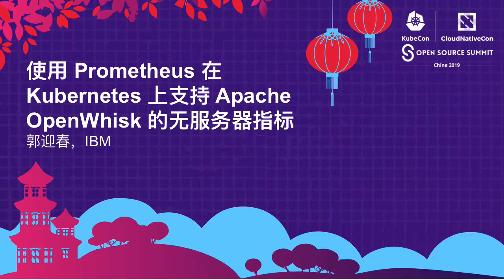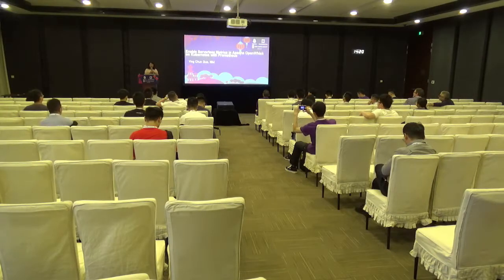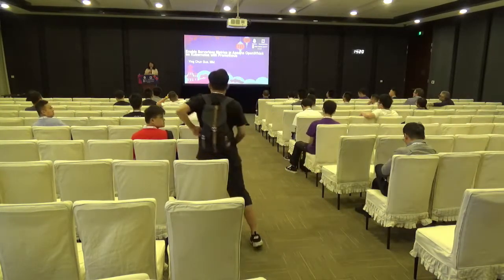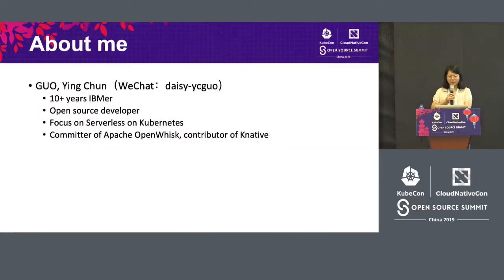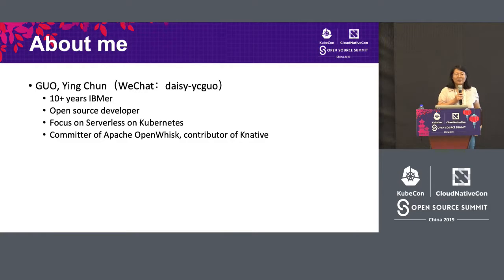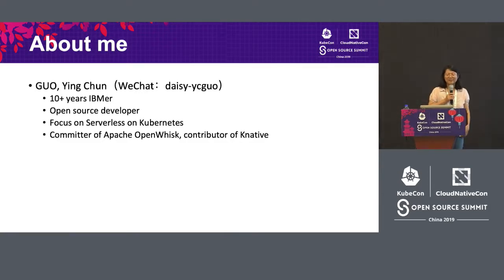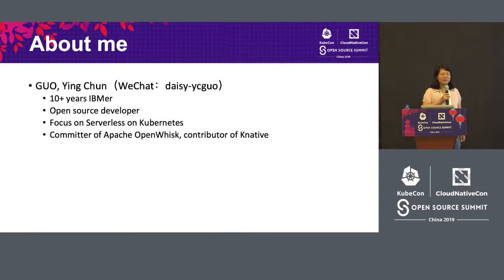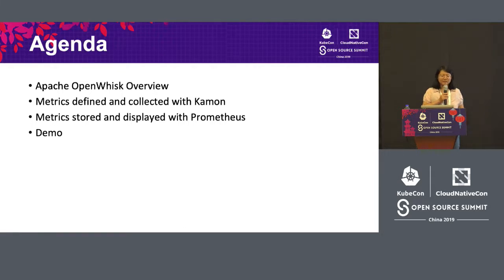I want to share with you how to enable serverless metrics in Apache OpenWhisk on Kubernetes with Prometheus. I'm from IBM. My name is Guying Chun. I've been working at IBM for more than 10 years as an open source developer, starting from OpenOffice to OpenStack. Then in 2016, my focus shifted to serverless. I started with Apache OpenWhisk, and now I also work on and contribute to Knative.